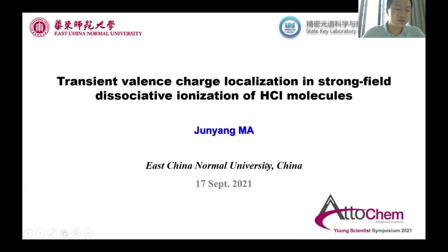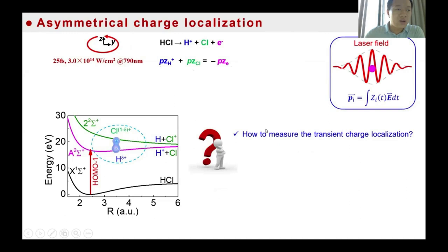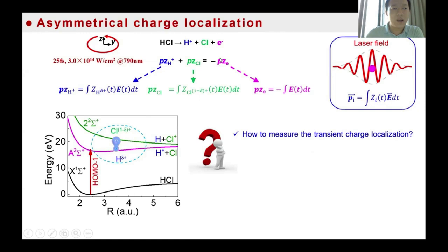Hello everyone, I am Junyang Ma. I would like to thank the community for the chance to introduce our recent work on transient charge localization in dissociative ionization of the hydrogen chloride molecule. When the HCl molecule is ionized by a strong laser field, the created positive charge is shared by H and Cl at a short internuclear distance, and is finally localized on the H side at a long internuclear distance. The charge information exists in the momentum of the particles from the strong laser field, governed by momentum conservation.